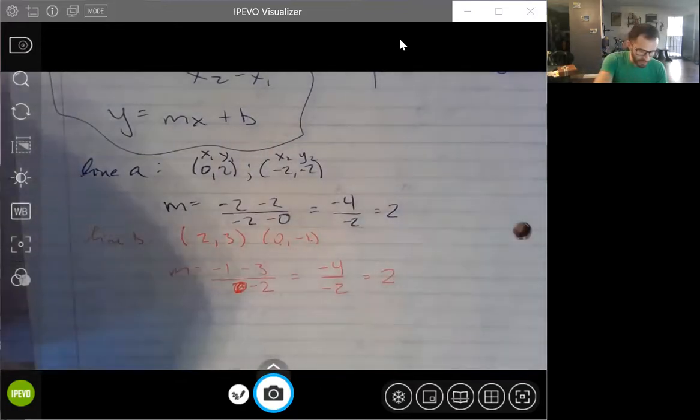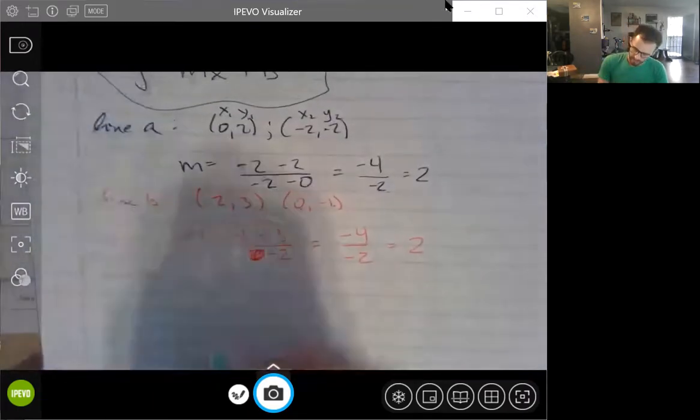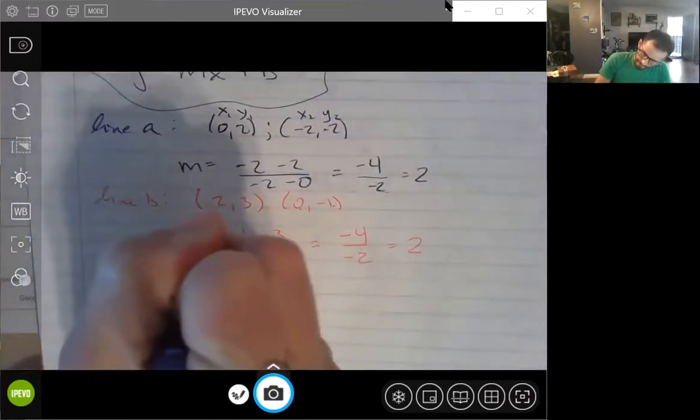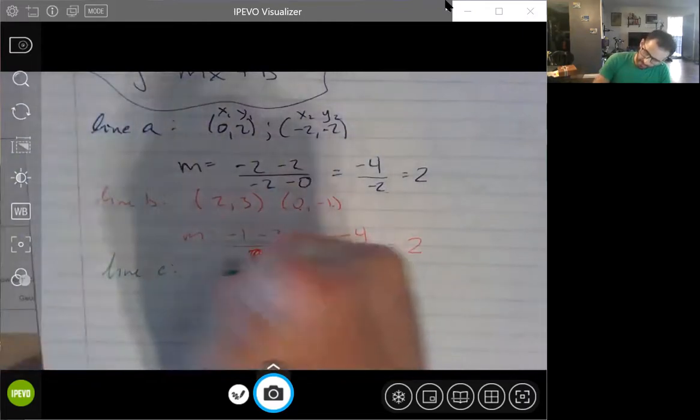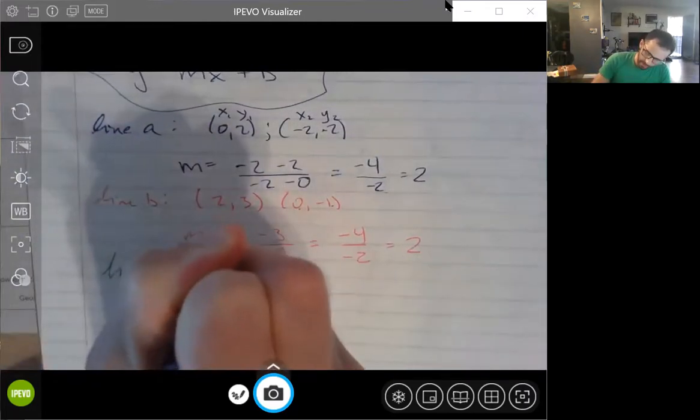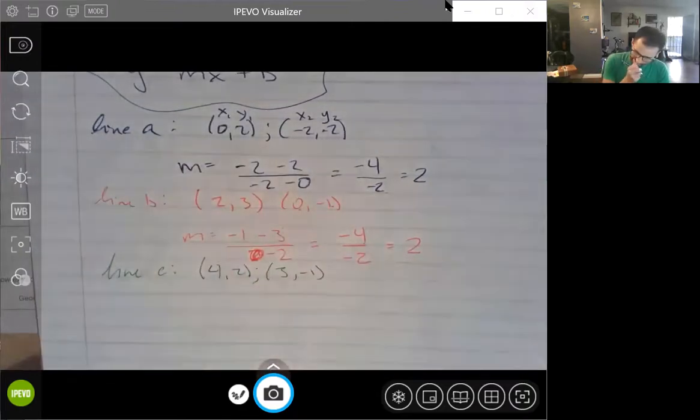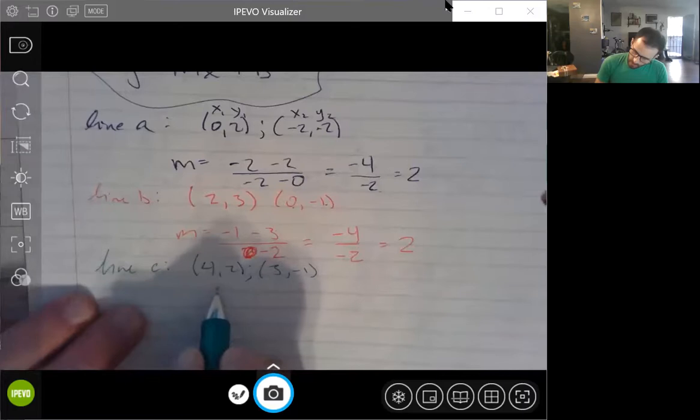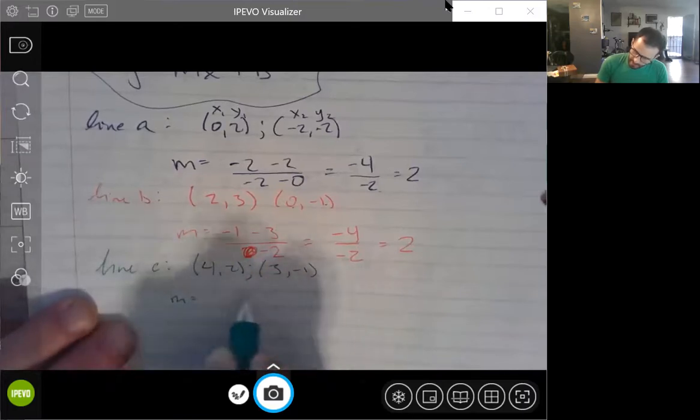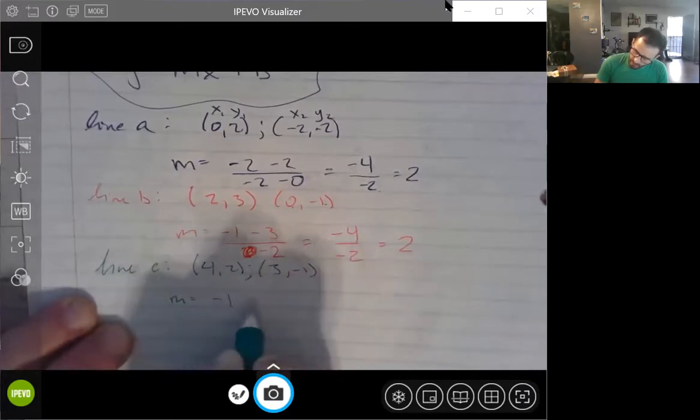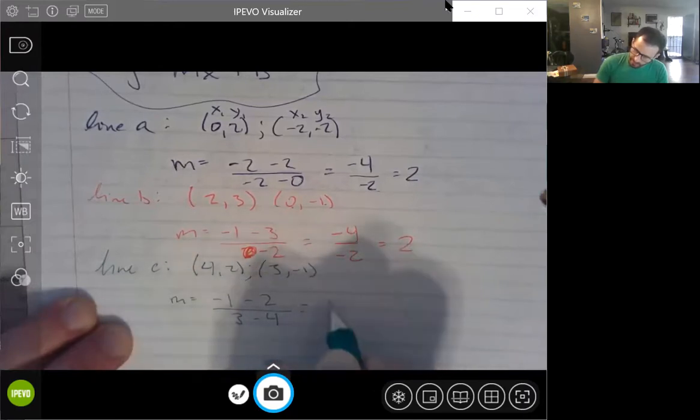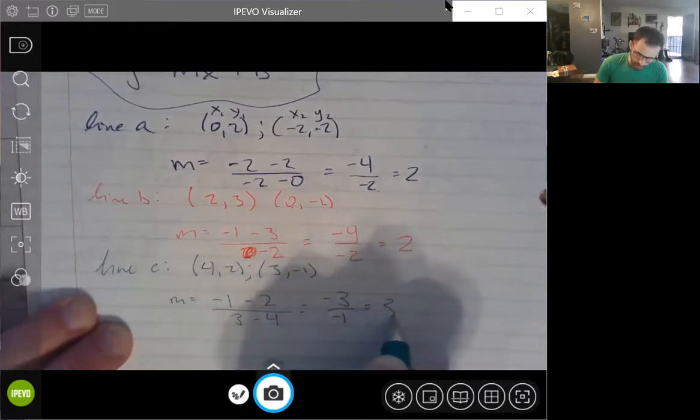Line C in green. We have a point at (4, 2), and we have a point at (3, -1). So we can say that the slope is y2 minus y1 all over x2 minus x1, -3 over -1, and that is positive 3.